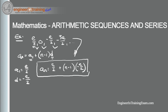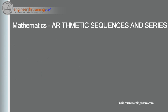Now let's talk about arithmetic series. An arithmetic series is simply the sum of the first n terms of an arithmetic sequence. The general formula is S_n = (n/2)(a_1 + a_n), where a_1 is the first term and a_n is the nth term of the sequence being summed.